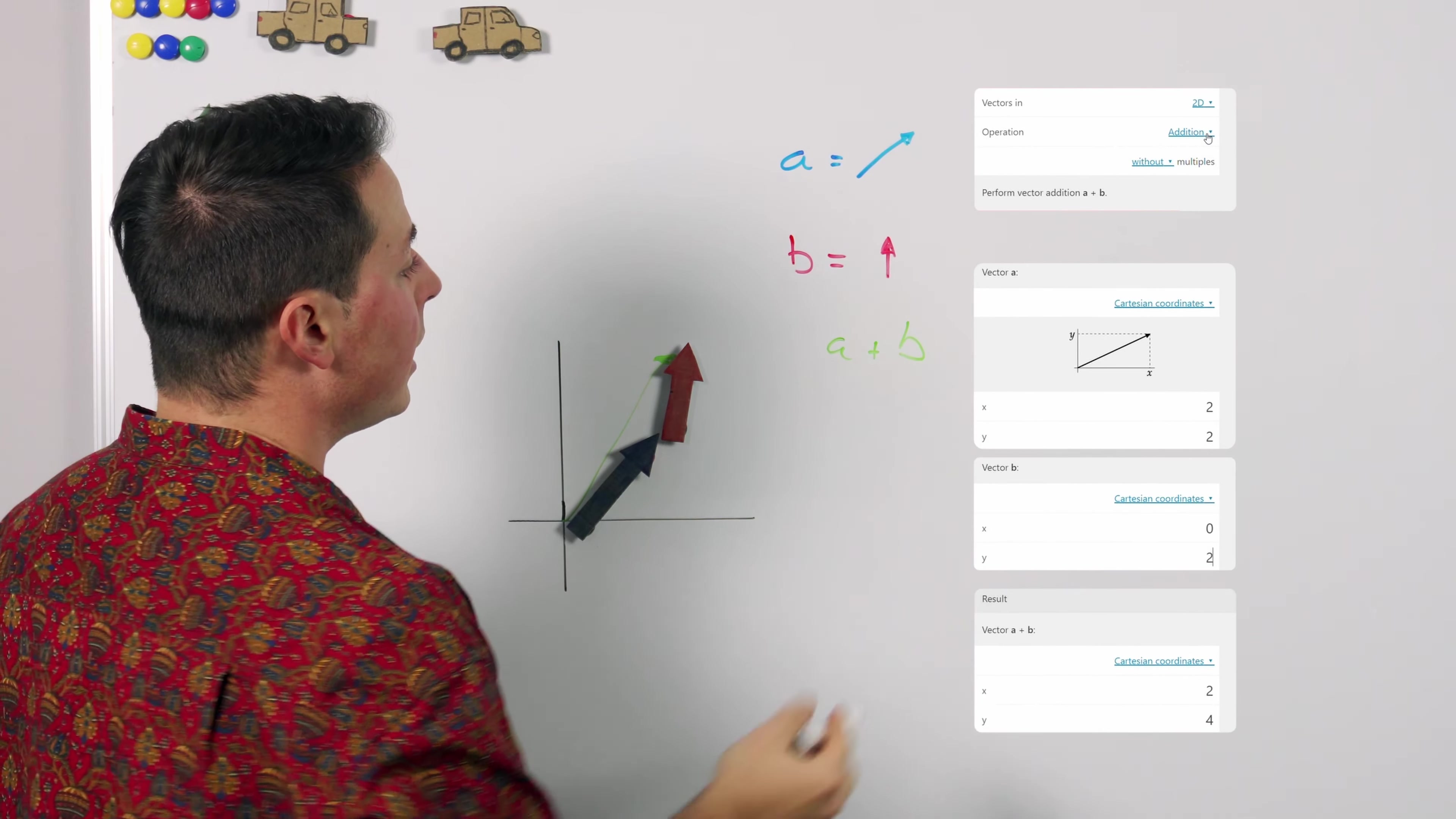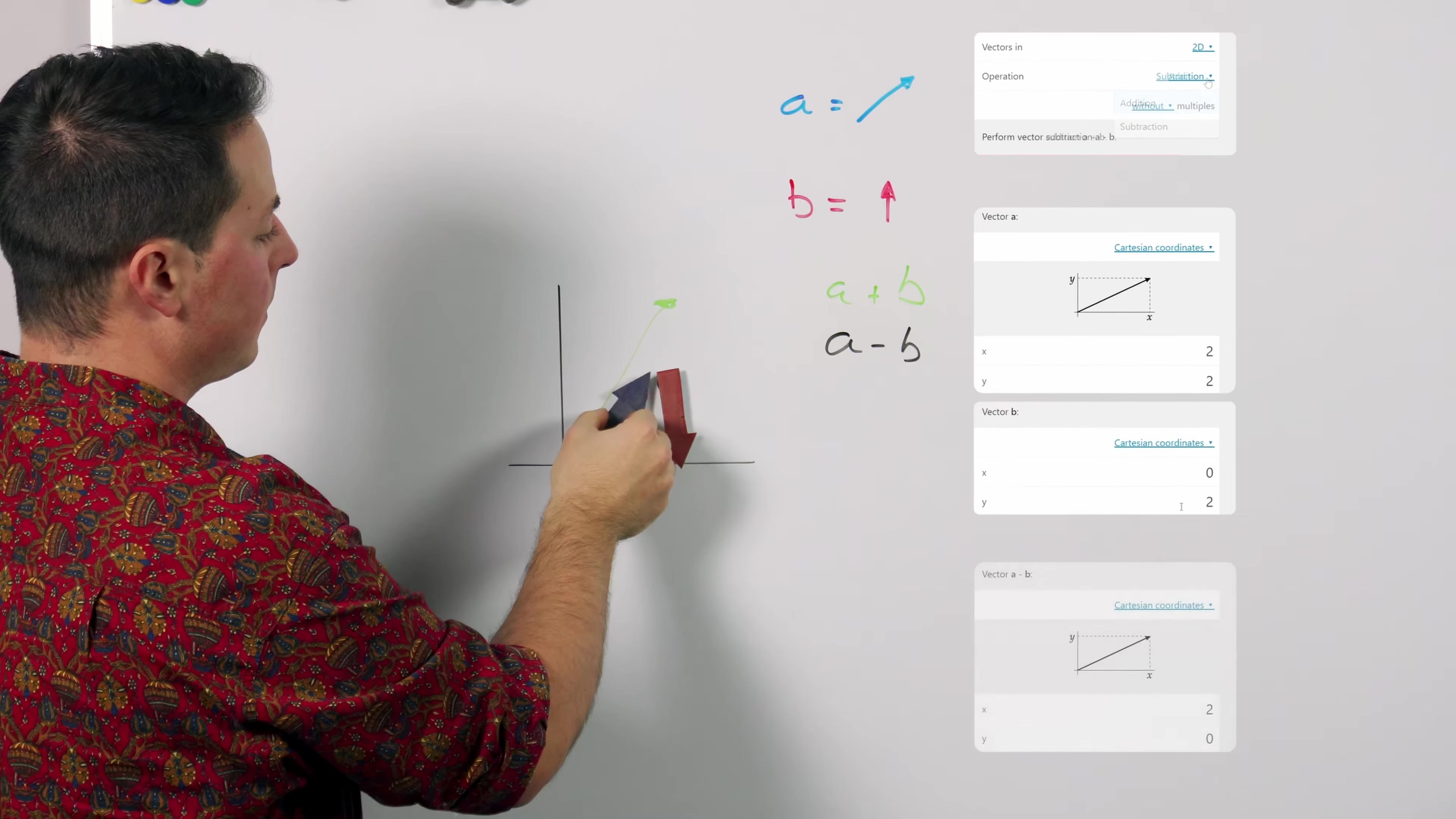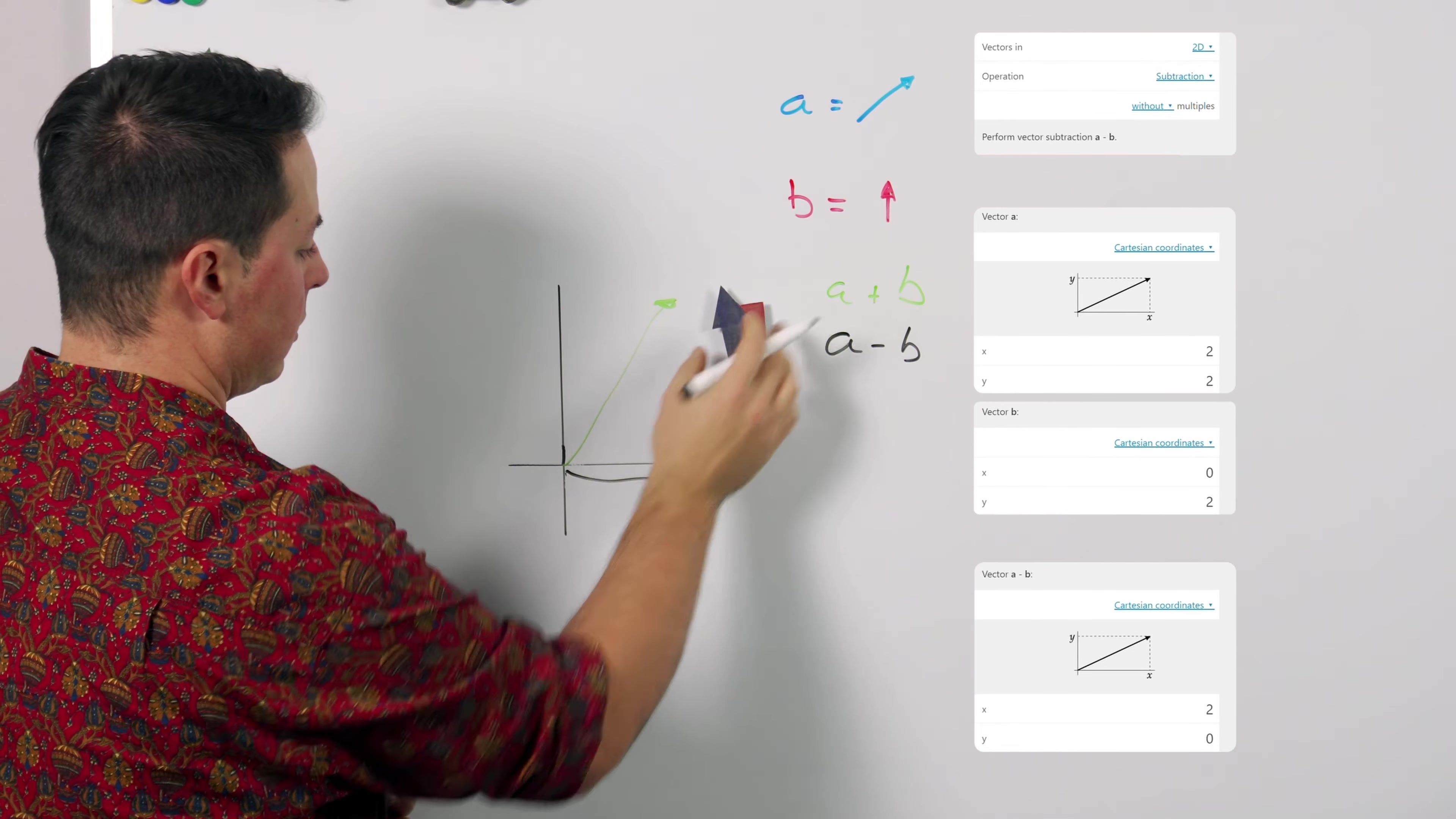However if we want to subtract and do a minus b first we need to flip the vector b and then add it to a leaving us with this other result.